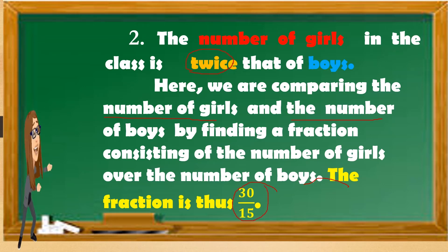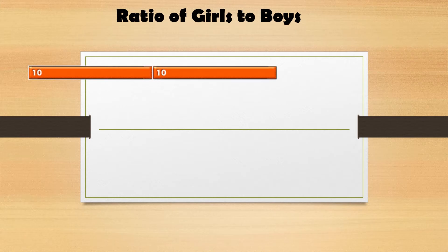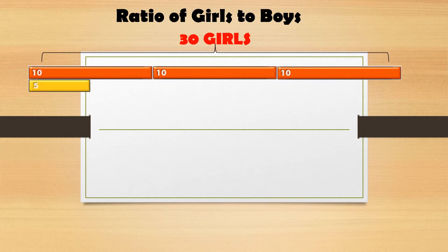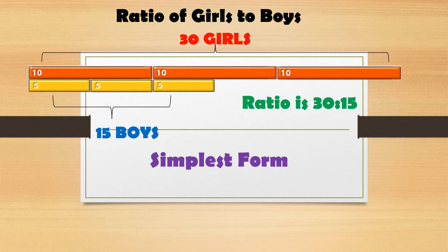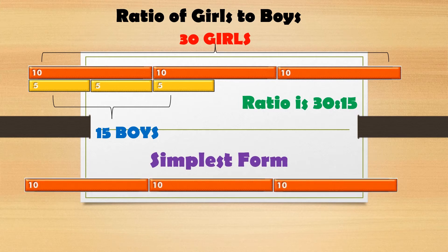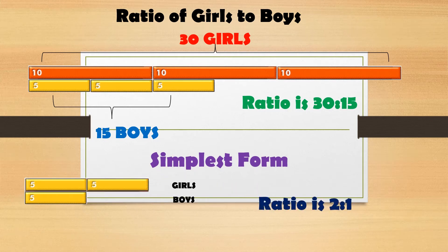So we have the ratio of girls to boys is 30 for the girls and 15 for the boys. So the ratio is 30 to 15, and the simplest form is 2 is to 1.